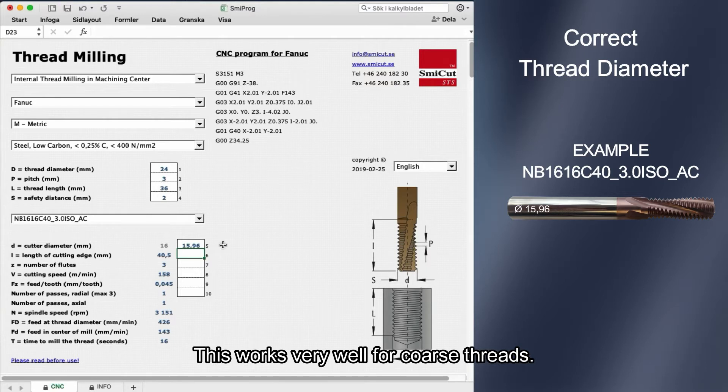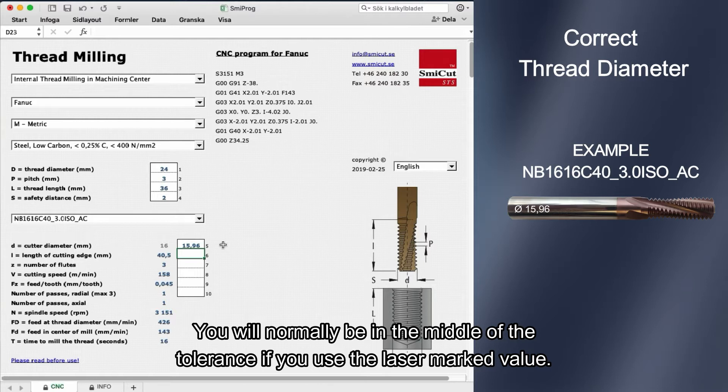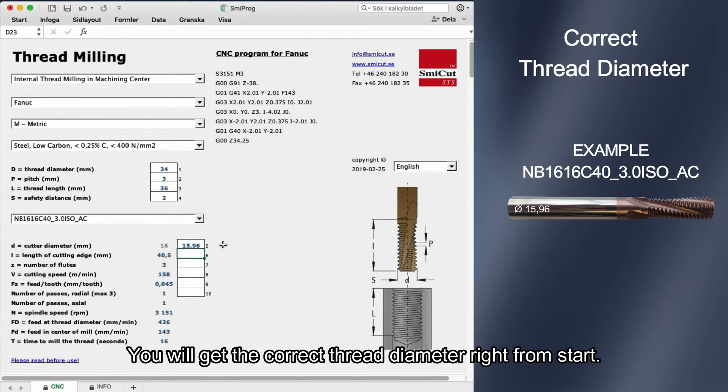This works very well for coarse threads. You will normally be in the middle of the tolerance if you use the laser marked value. You will get the correct thread diameter right from start.